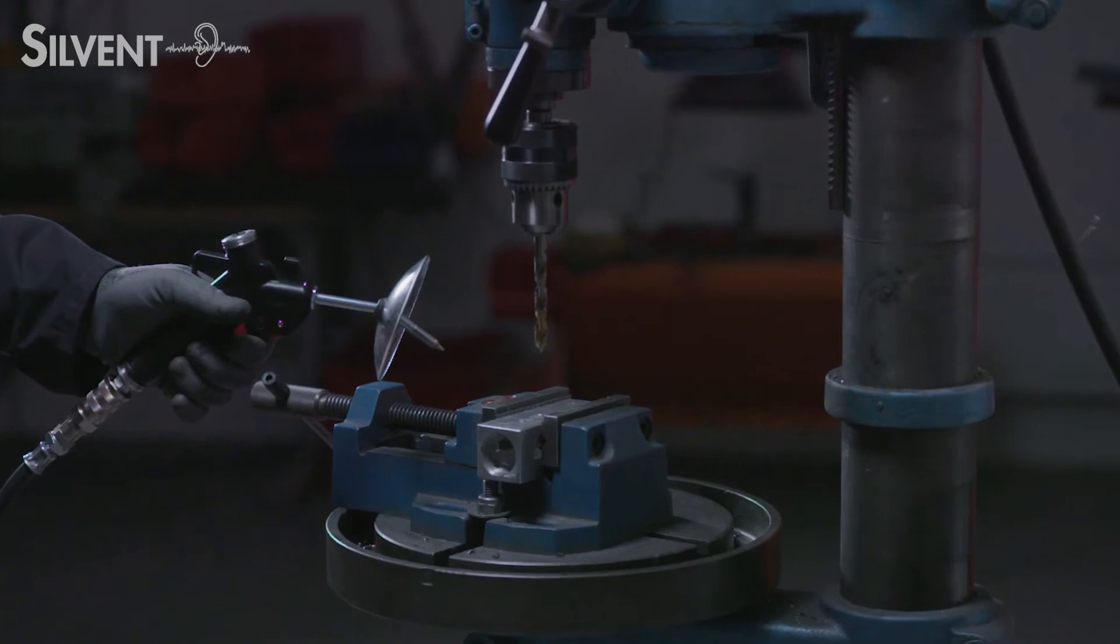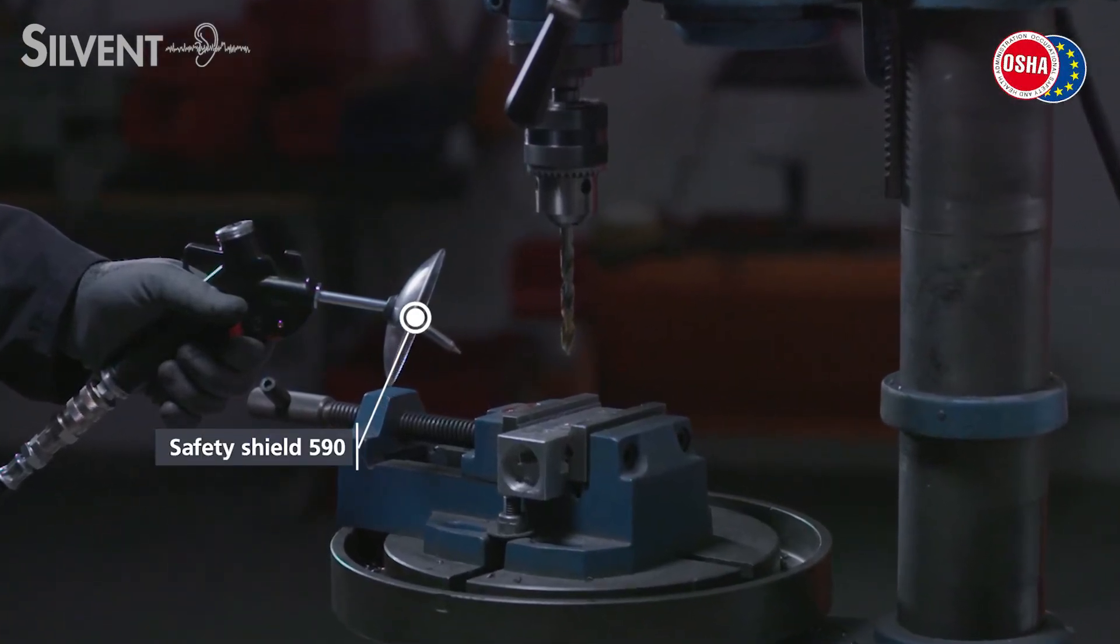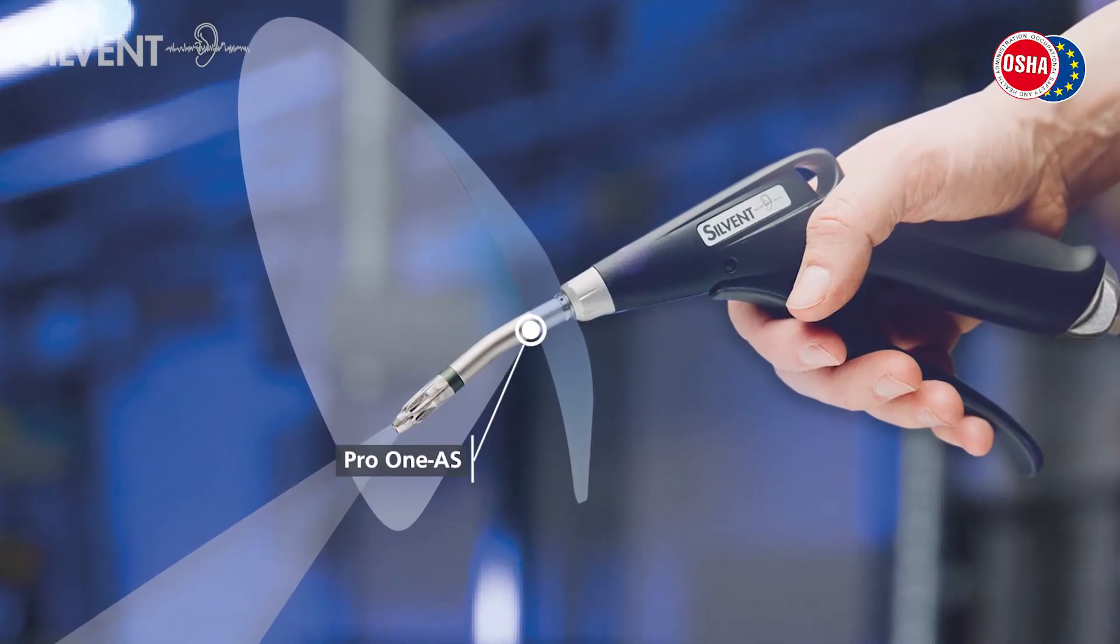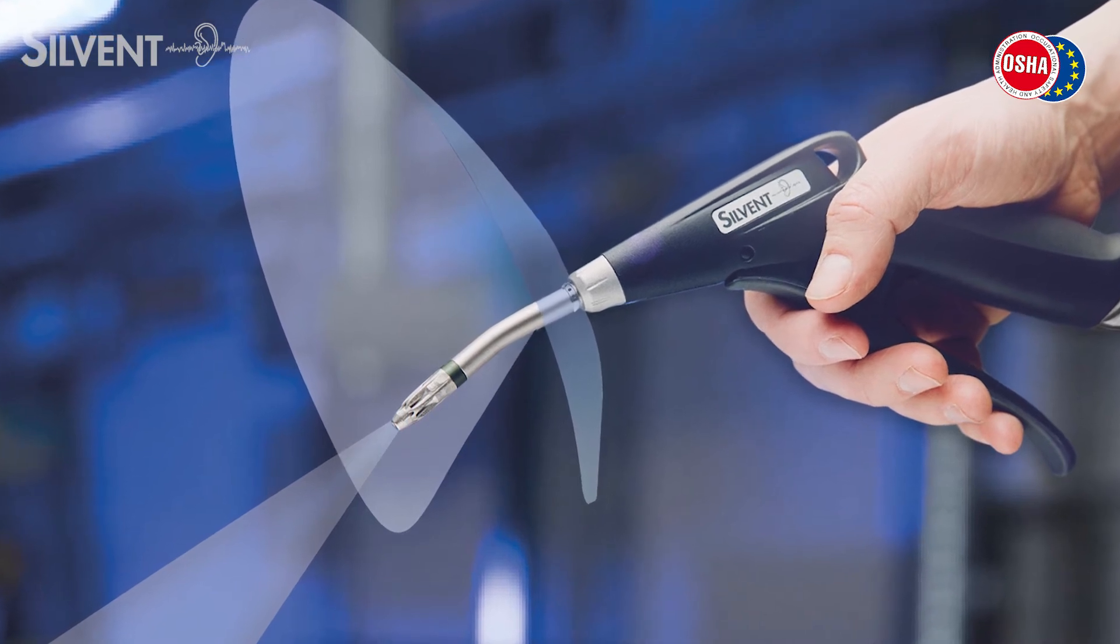To minimize the risk of eye injuries, Sylvent's air guns can be equipped with either a plastic safety shield or an integrated air shield. Both prevent spattering and flying chips from striking the body and eyes of the operator.